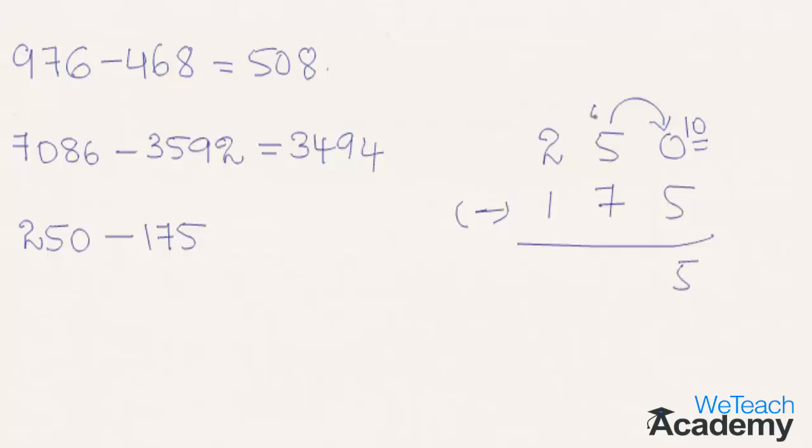As 1 is borrowed, 5 becomes 4. And as 4 is less than 7, let us borrow 1 from the next digit 2. We get here 14. So 14 minus 7 is 7. As 1 is borrowed from here, 2 becomes 1, and 1 minus 1 is 0. So we get the result as 75.